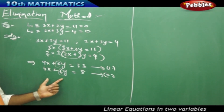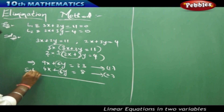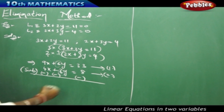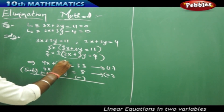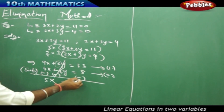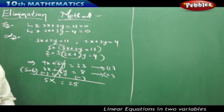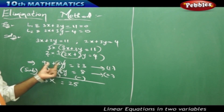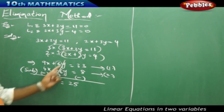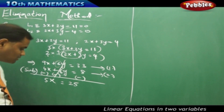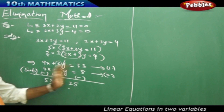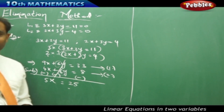Once the coefficients of y are equal, I subtract the equations. Since both terms are positive 6y, subtracting makes them cancel: 6y minus 6y equals 0. Then 9x minus 4x gives 5x, and 33 minus 8 gives 25. This reduces to a linear equation in one variable: 5x equals 25, which is easy to solve. The intention of making coefficients equal is to cancel one variable through subtraction.